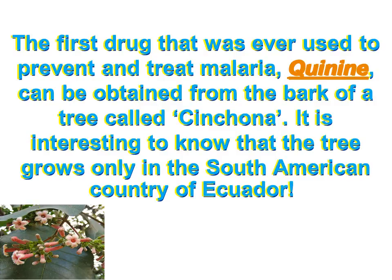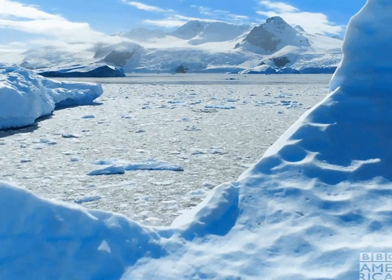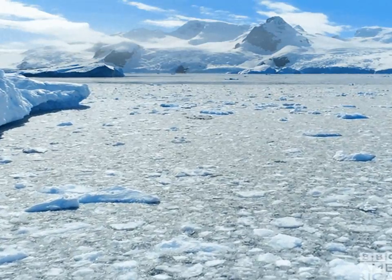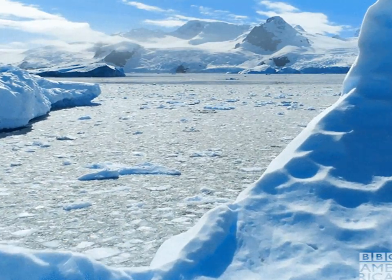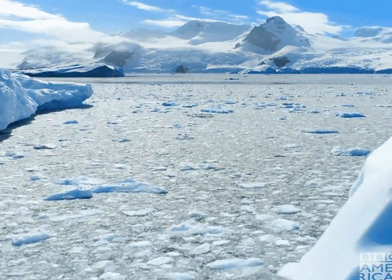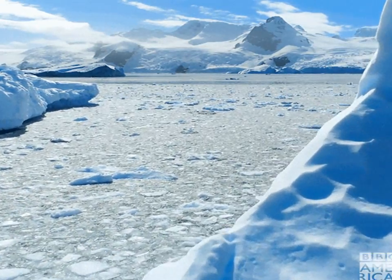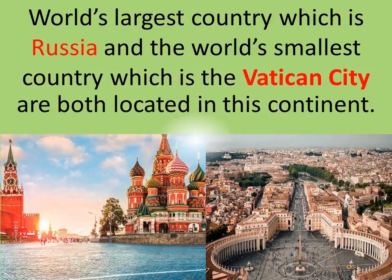Next amazing fact is from Antarctica. Antarctica is the world's largest cold desert. There is no permanent resident in this area. The only humans inhabiting this continent are scientists, tourists or explorers. The next amazing fact comes from Europe. World's largest country, Russia, and world's smallest country, the Vatican City, are both located in Europe.